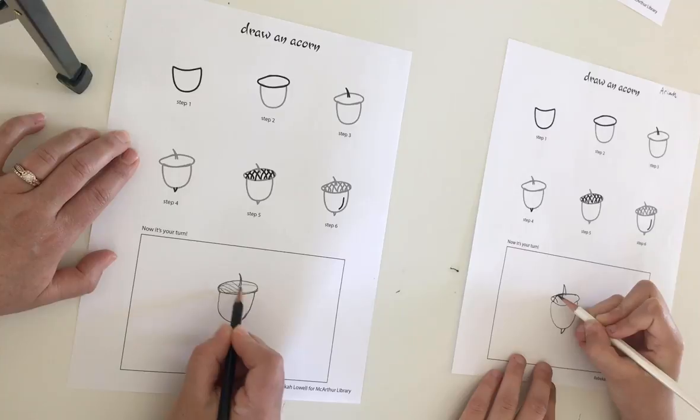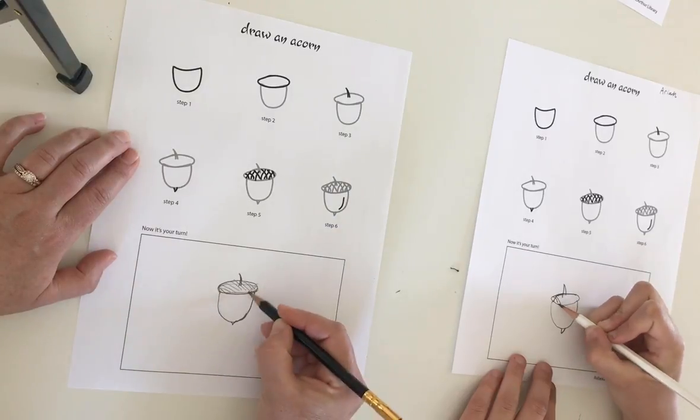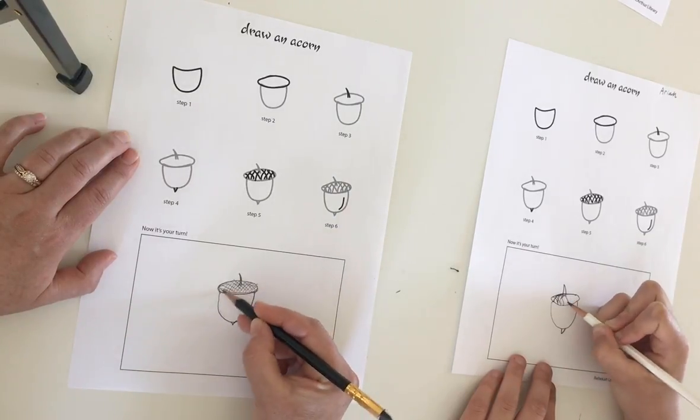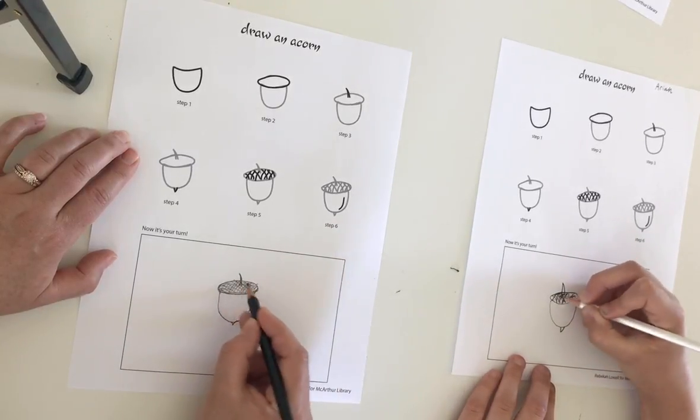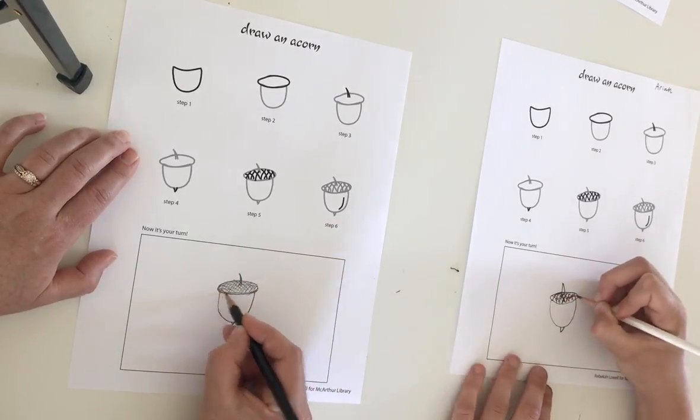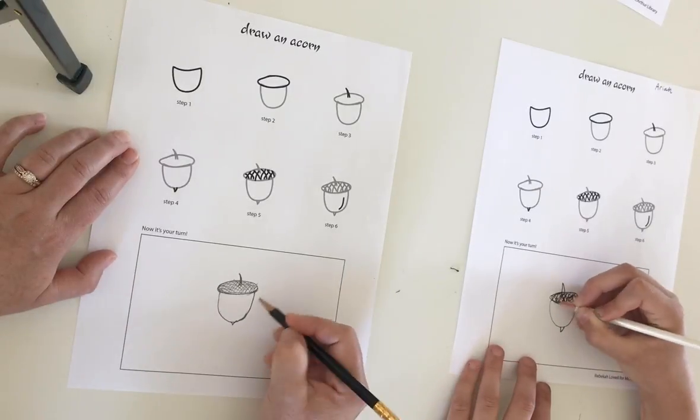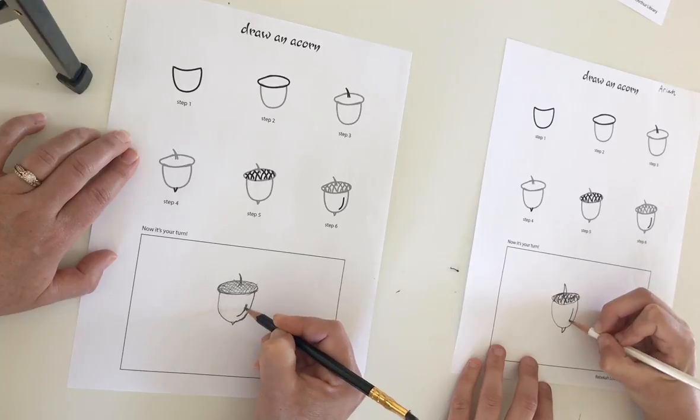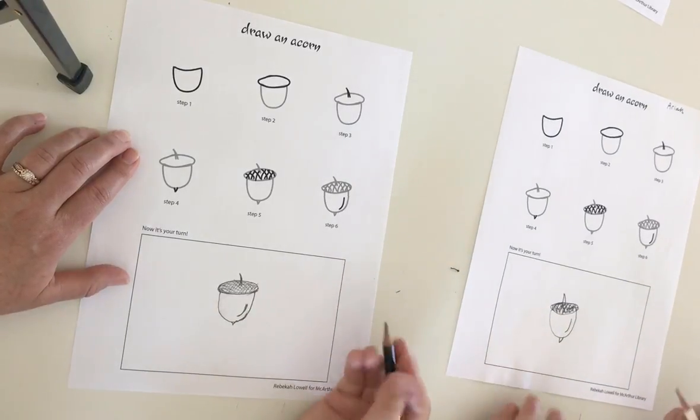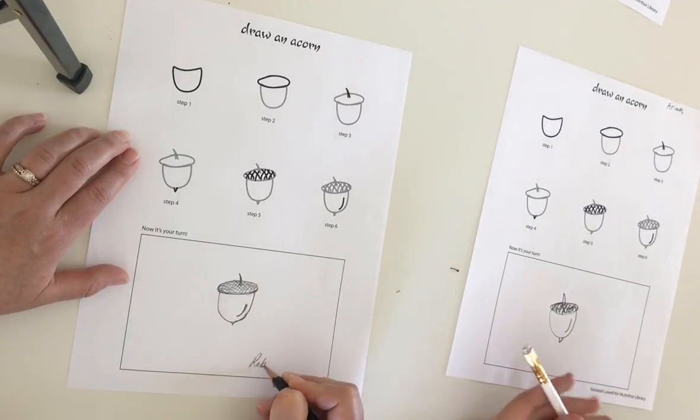Then step five is going to be adding that texture to the cap. To make it easy, I just do crisscross lines. You can go over them if you want. And then step six is really just a final touch, a little line that makes it look shiny. And that's it! Don't forget to sign your work.